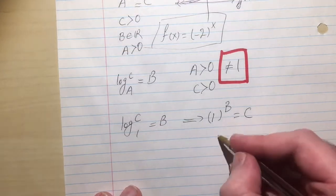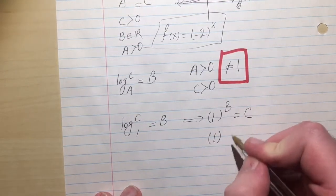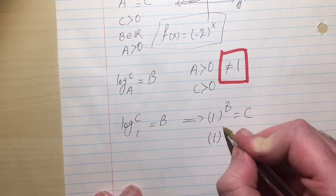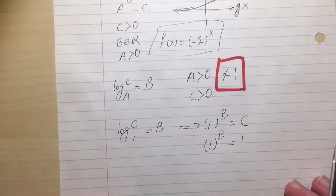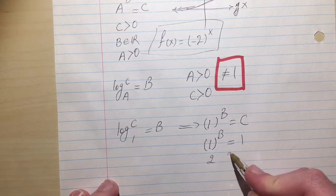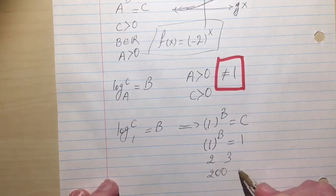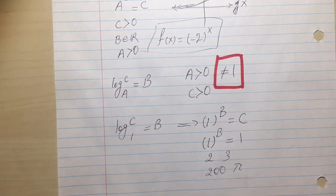So I know C is always 1, so I'm going to write C, because 1 to the exponent of everything is 1. But I don't have a definite answer for B. B can be 2, can be 3, can be 200, can be pi. We don't have a definite answer, and that's why we dismiss it from the domain of our function.